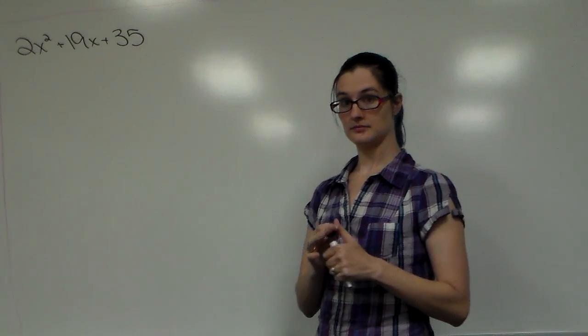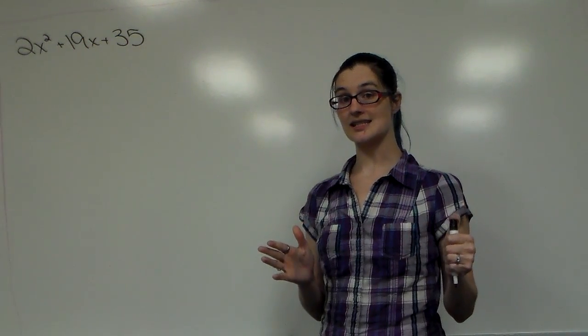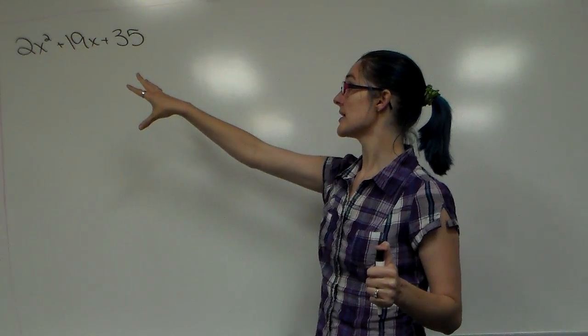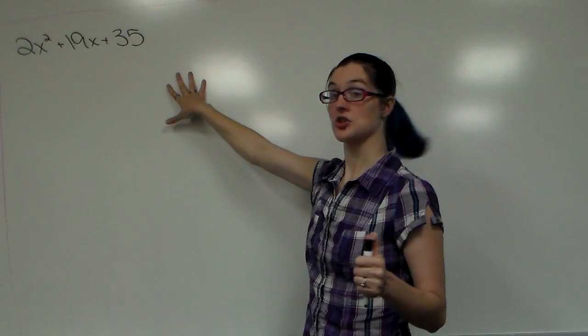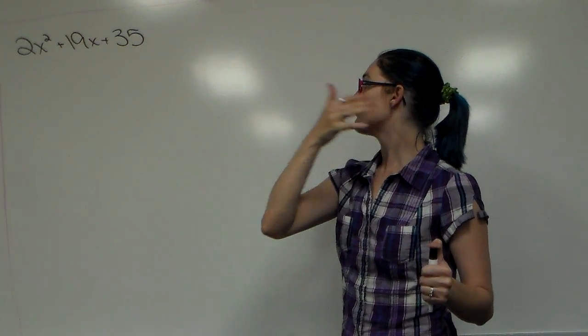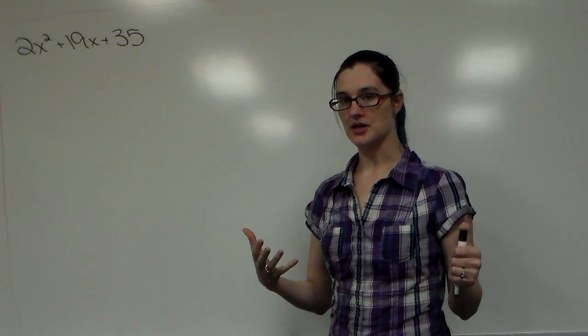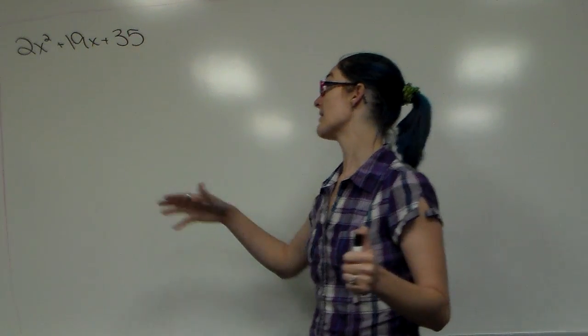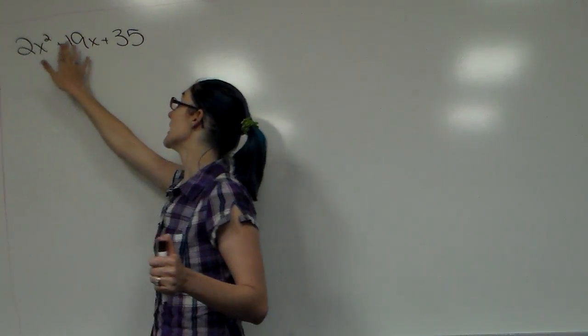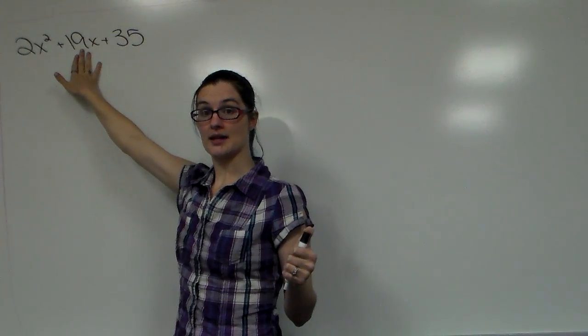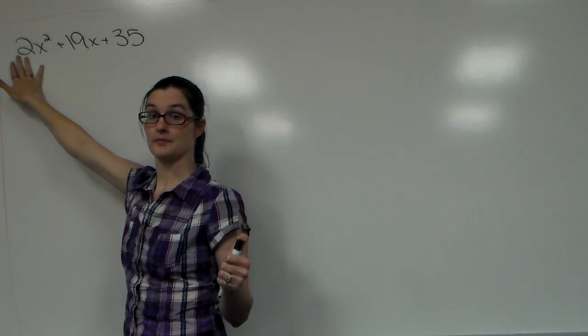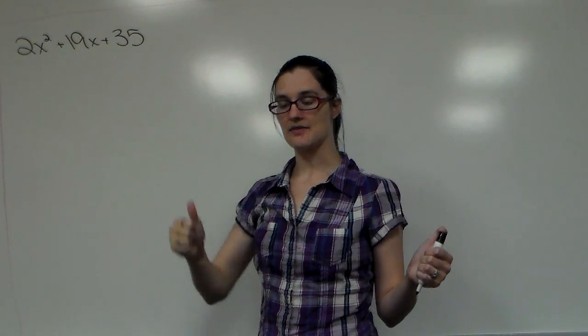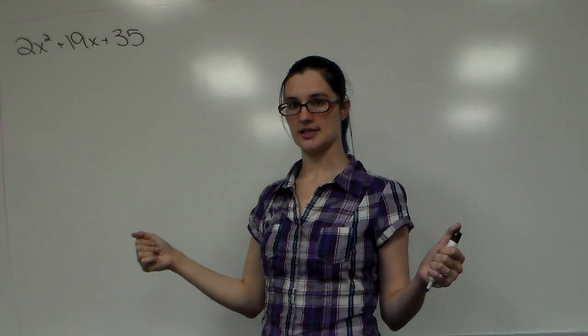The first thing we need to do is you can only use AC method with three terms. We've got 2x², 19x, and 35, so three terms. First thing is with any type of factoring, the first thing you should always do is see if there is a GCF. We have 2 and 19, right off the bat nothing's in common. There's not a variable in all three of them, there's no GCF.